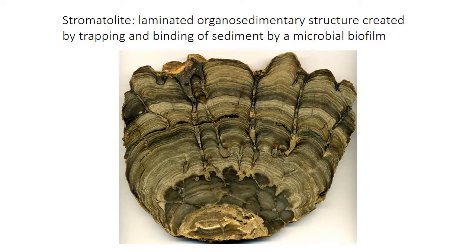The most common form of microbialite you would encounter is a stromatolite — a layered organo-sedimentary structure with thin laminations and an overall shape that can vary from dome-shaped or hemispherical, to columnar, branching, or even conical. In stromatolites, trapping and binding of sediment by the biofilm forms these layers, but lithification by carbonate precipitation is also really critical for the upward growth of the stromatolite.